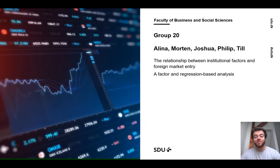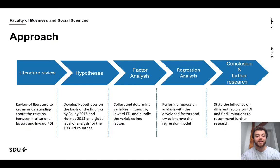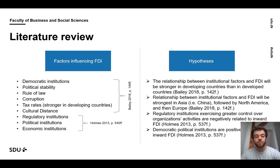To explain this relationship, we performed a factor and regression analysis. First, we did a literature review to understand the relation between institutional factors and inward FDI. Secondly, we built up hypotheses on the basis of Bayley from 2018 and Holmes of 2013 on a global level of analysis for the 193 United Nations countries. Third, we collected and determined variables influencing inward FDI and bundled the variables into factors. With these factors, we performed a regression analysis and tried to improve the regression models with other variables. And in the end, we state our conclusion, limitations of our work and recommend further research.